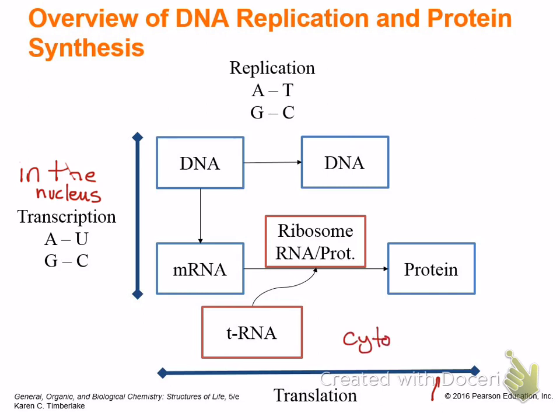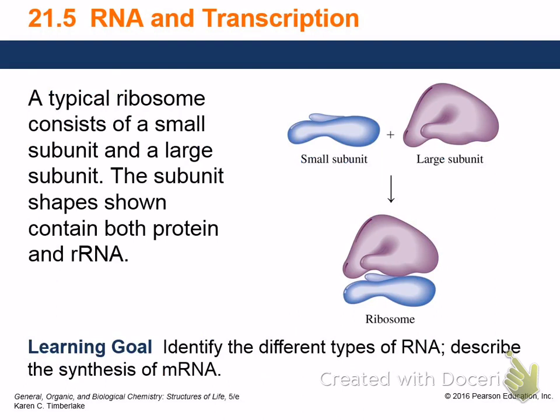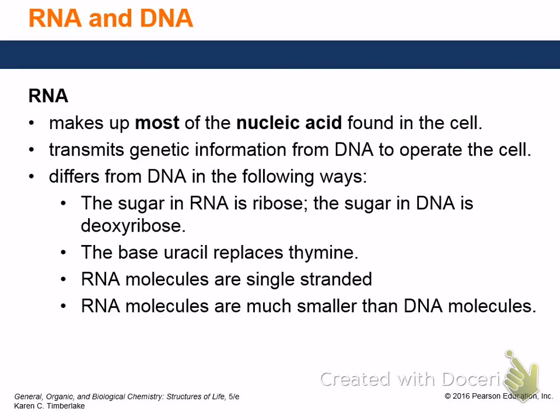Regarding slicing — yes, there are introns and exons. That's part of the transcription step. There are little bits and pieces that have to be pulled out before the mRNA can be used. The ribosome is two parts: one part latches onto the mRNA and the other part clamps around it, and that starts the translation process. RNA actually makes up most of the nucleic acids found in your cells — it's not mostly DNA, it's mostly RNA.